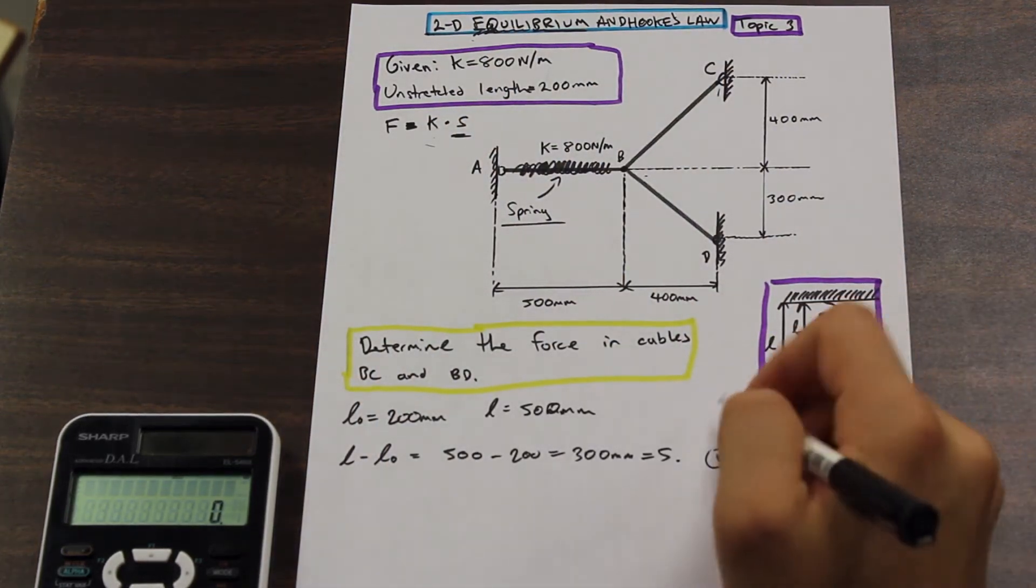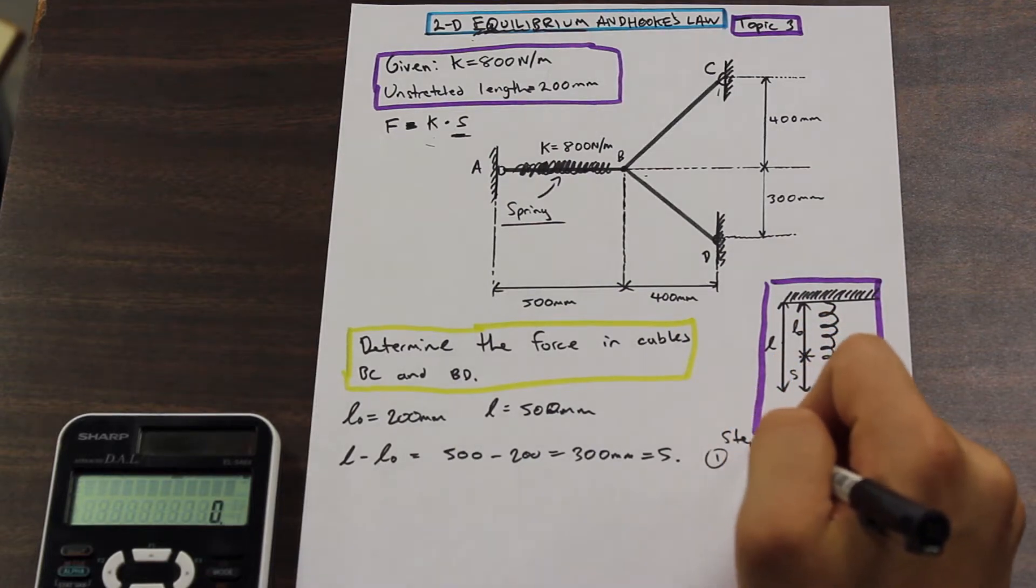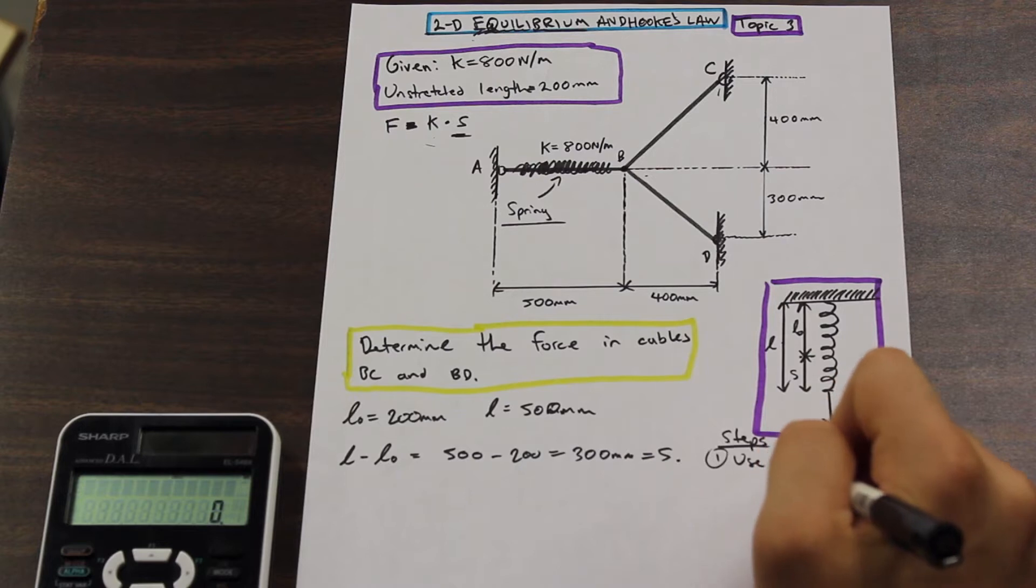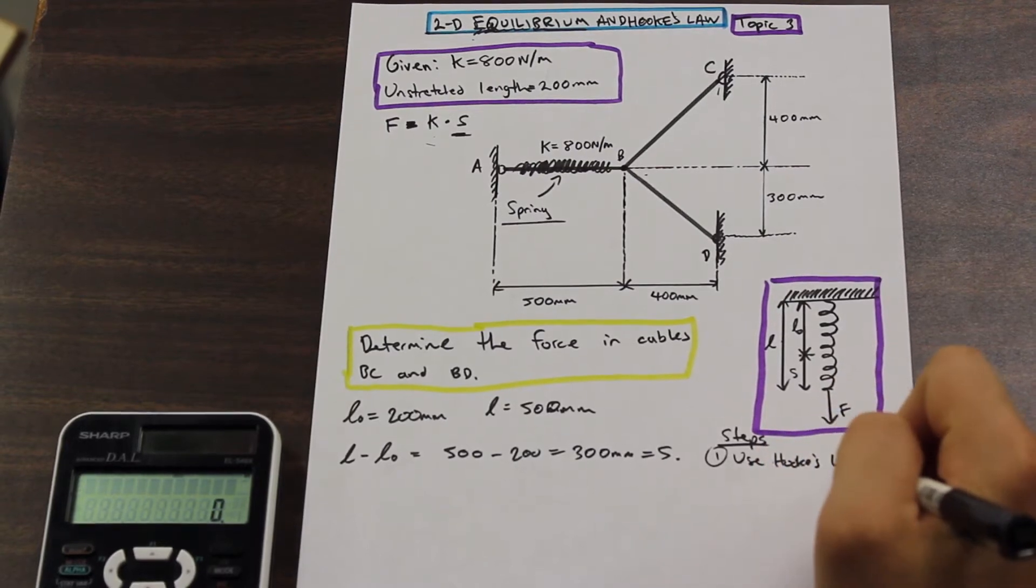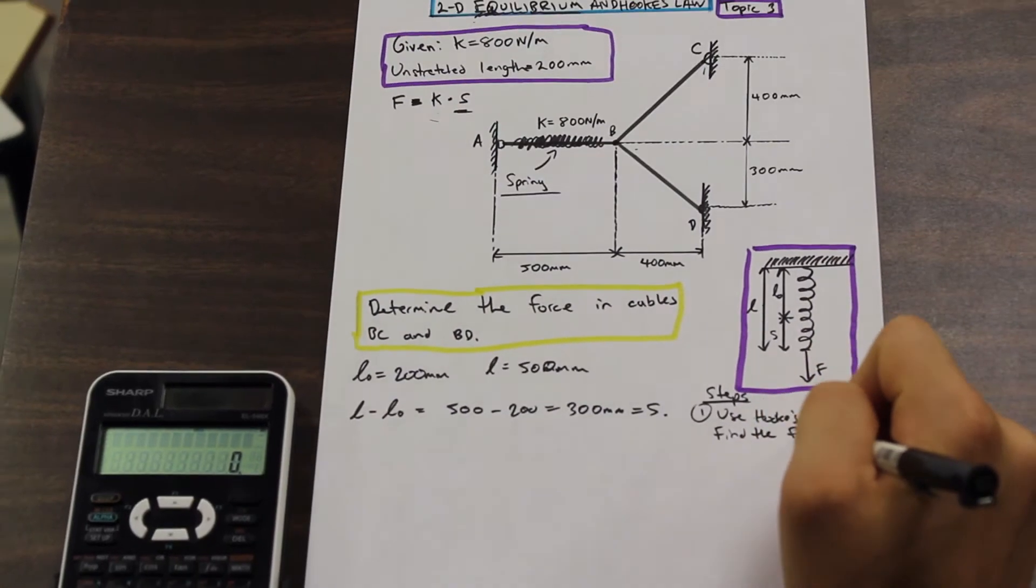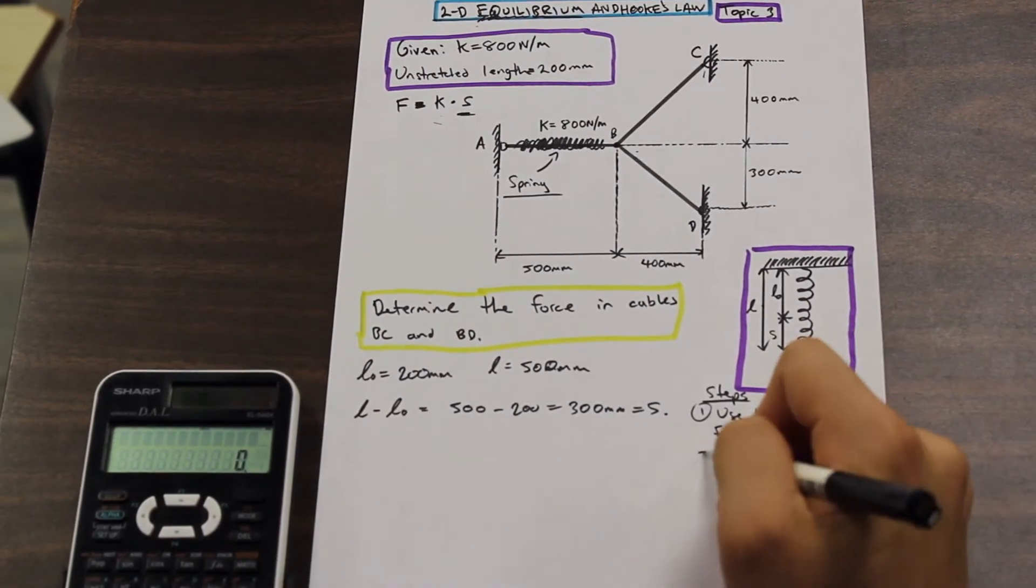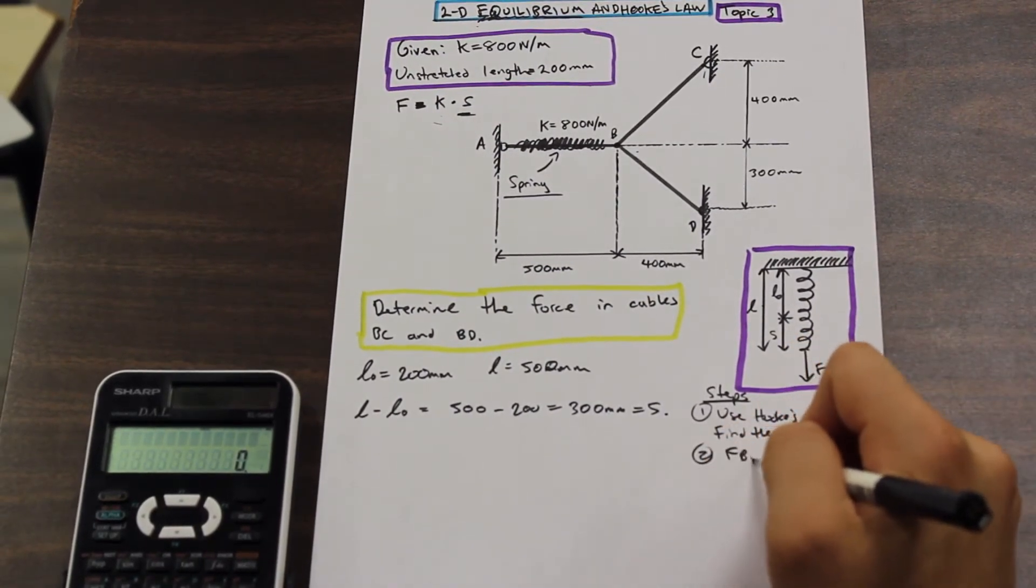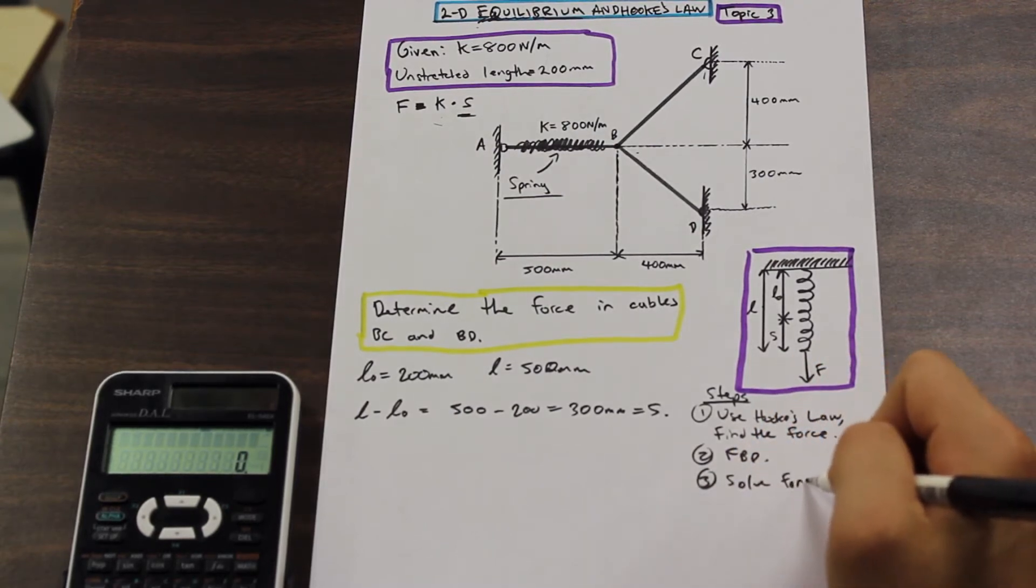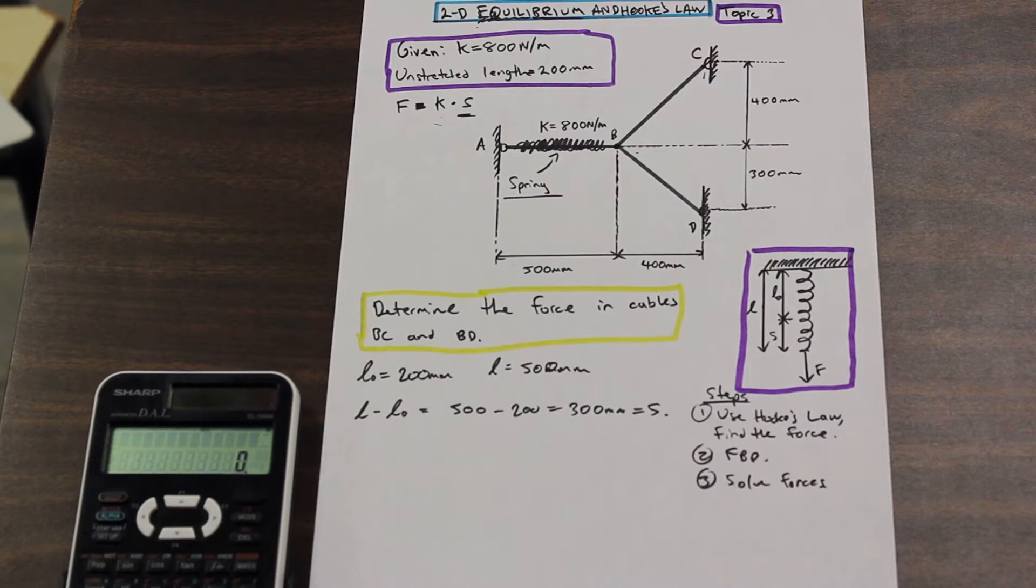So step one is use Hooke's law, find the force. Two, we're going to draw our free body diagram and then three, solve the forces and we're going to solve the forces using our free body diagram.